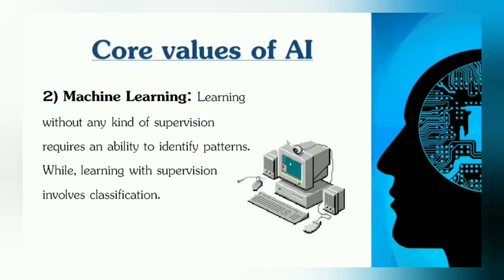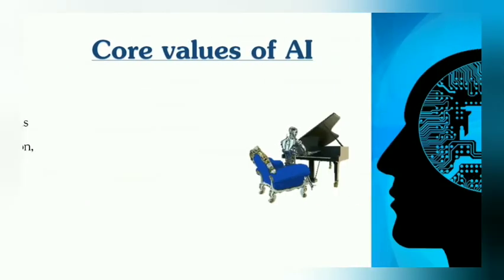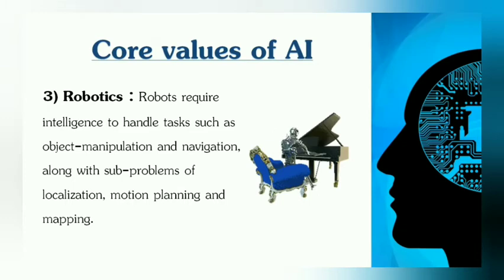The second core value is machine learning. Learning without any kind of supervision — machine learning — needs the machine to know the identification of patterns. The third value is robotics. The robots require intelligence to handle tasks such as object manipulation and navigation. They should know solutions to sub-problems like localization, motion planning and mapping.